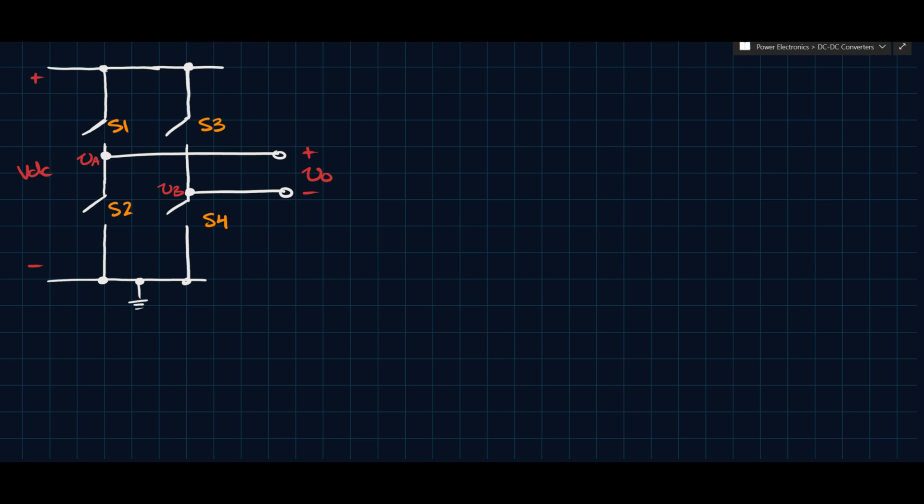So we've labeled the switches S1, 2, 3, 4 as follows, and this is a fairly standard way of labeling them. We have, I guess you can call this leg A, and then you can call this leg B.